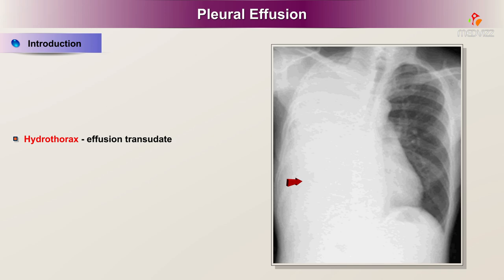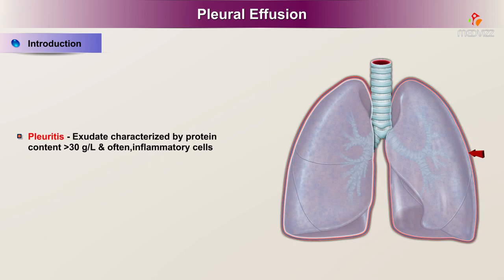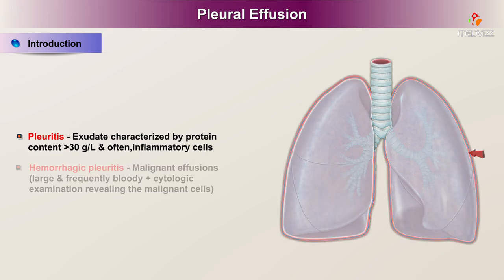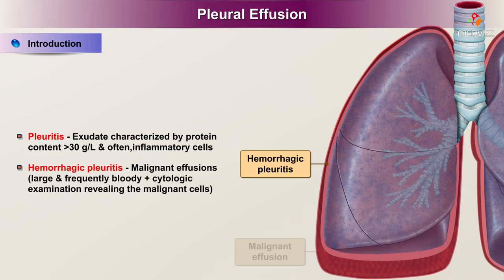Hydrothorax: the effusion is a transudate. Note that congestive heart failure is the most common cause of bilateral hydrothorax. Pleuritis: an exudate characterized by protein content greater than 30 grams per liter and often inflammatory cells. Hemorrhagic pleuritis involves malignant effusions, which are large and frequently bloody, with cytologic examination revealing malignant cells.